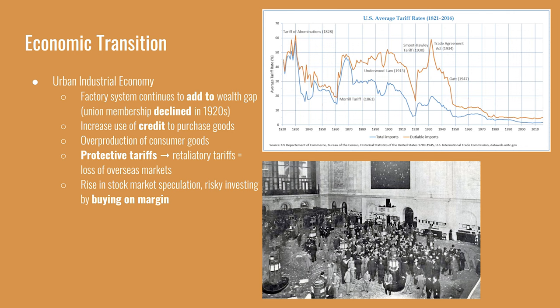The U.S. government implemented protective tariffs to protect domestic factories from foreign competition, which spurred retaliatory tariffs from other countries. European tariffs made American products more expensive abroad, leading to lower sales for American companies. A final crack in the economic foundation was the stock market, which experienced a rise in speculation — people betting it would continue to grow. Americans were buying equity in companies that were actually bad investments at inflated prices, creating a huge bubble. Worse, there was an increase in buying on margin, where investors put down a small percentage of a stock's price and a bank covered the rest, expecting repayment when the stock was sold. When the market crashed, everyone with money in the stock market couldn't get it back to repay loans or meet their margin calls.